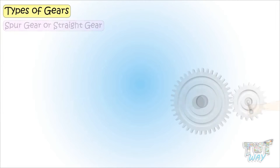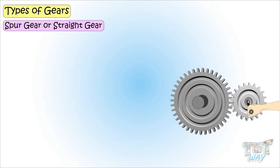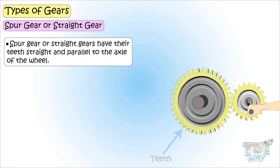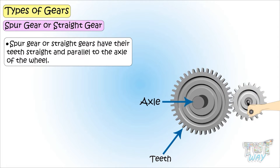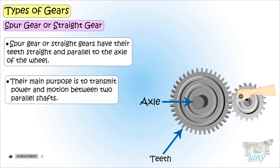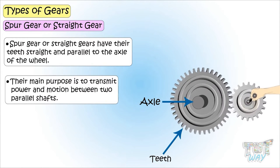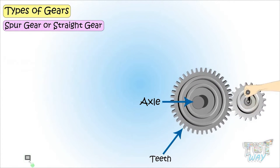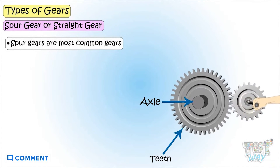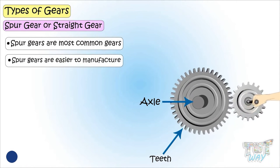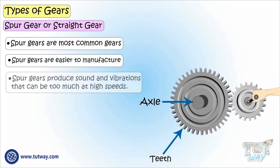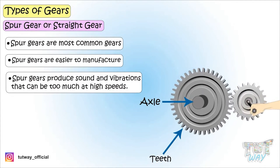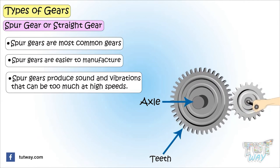The first type is the spur gear, or straight gear. Spur gears have their teeth straight and parallel to the axle of the wheel. Their main purpose is to transmit power and motion between two parallel shafts. Spur gears are the most common gears and are easier to manufacture, but they produce sound and vibrations that can be excessive at high speeds — that is, they produce too much noise.